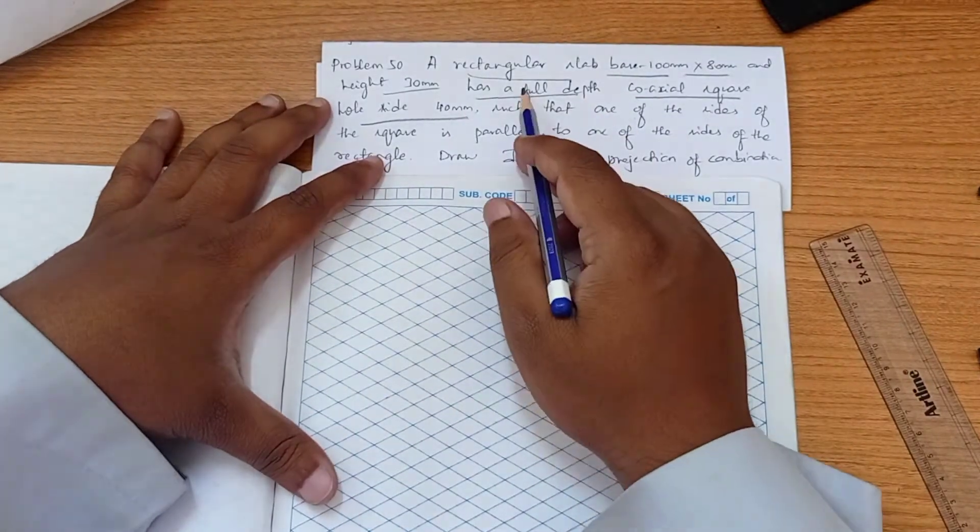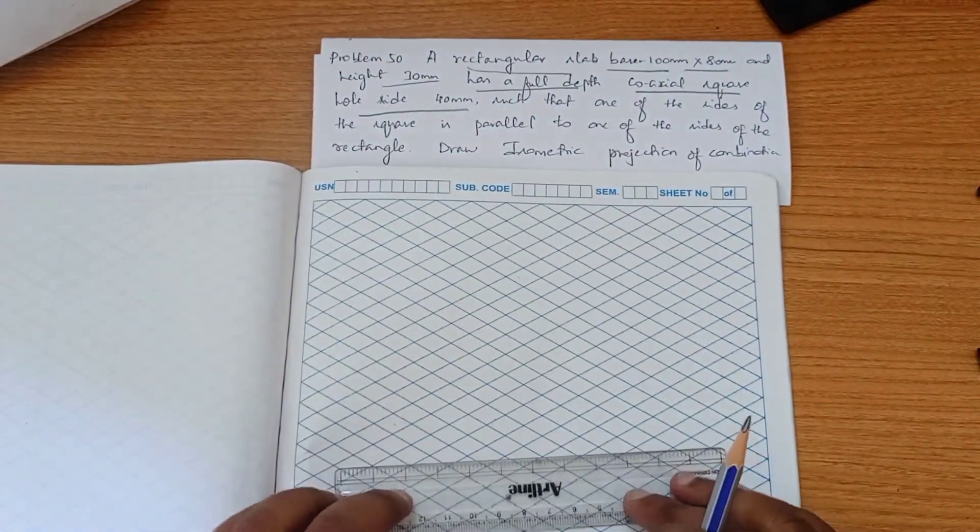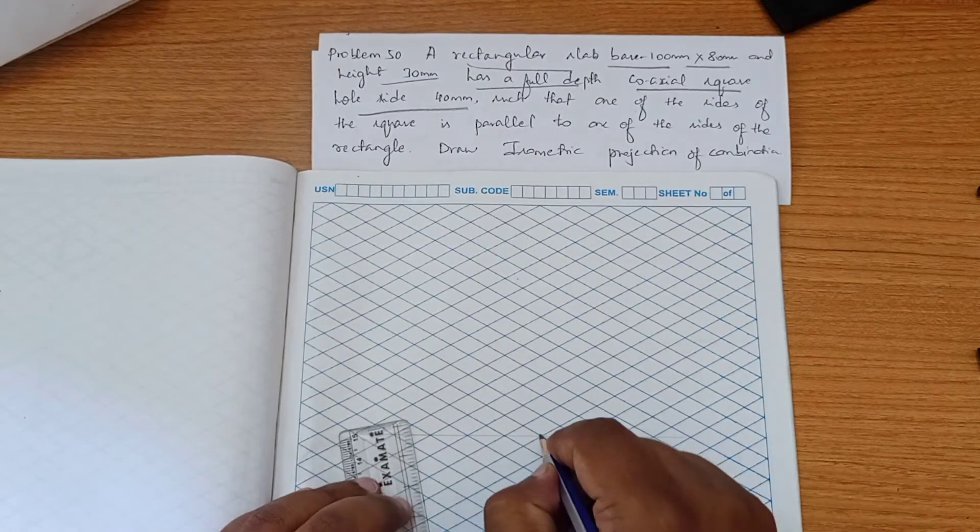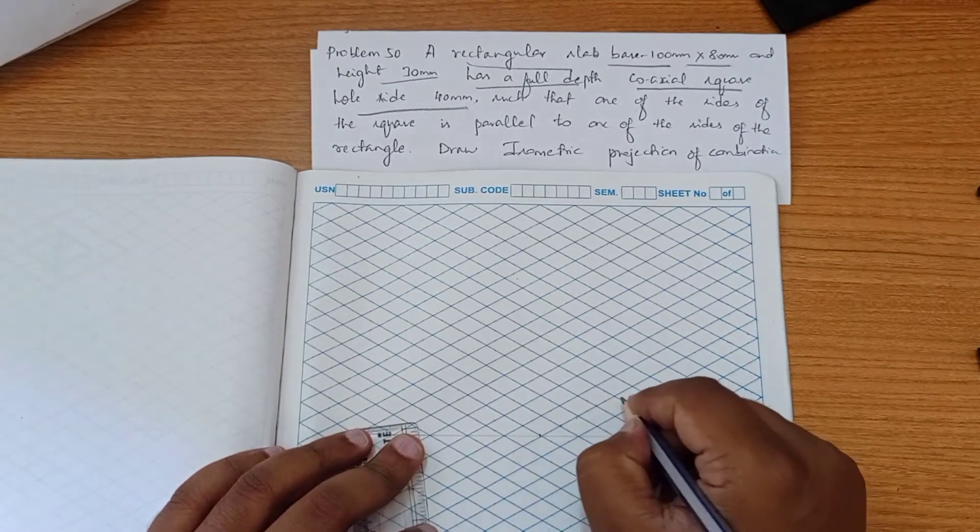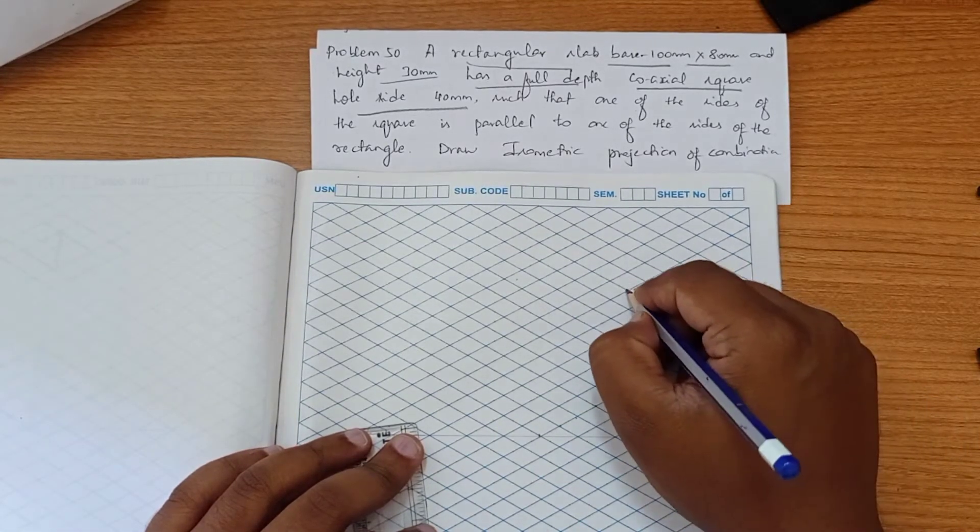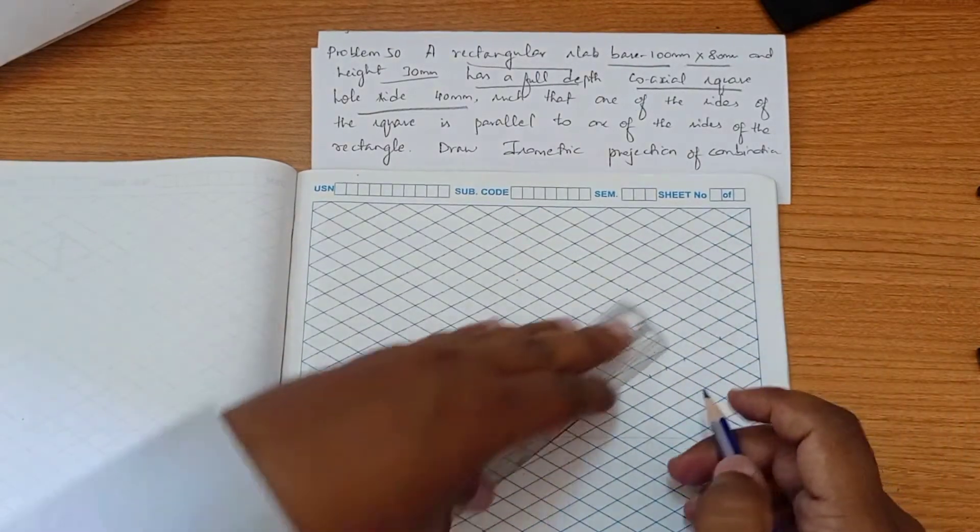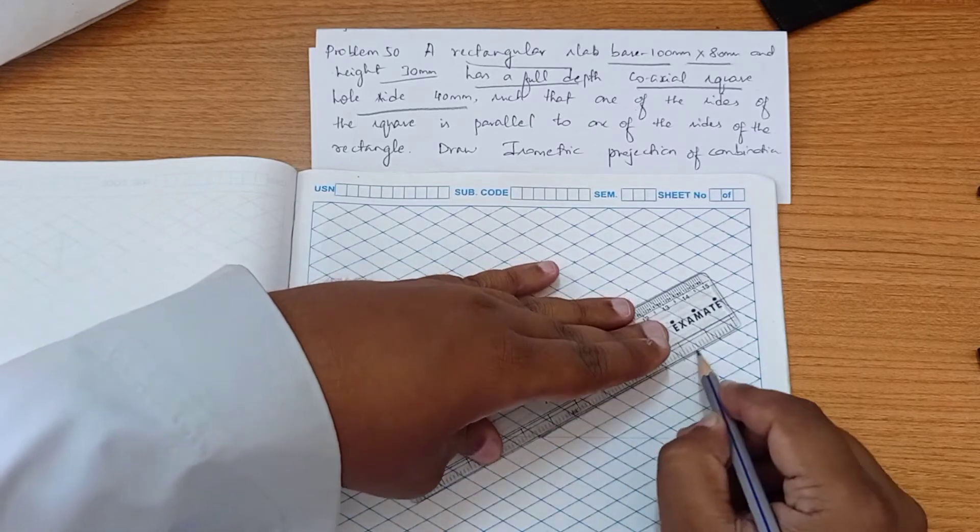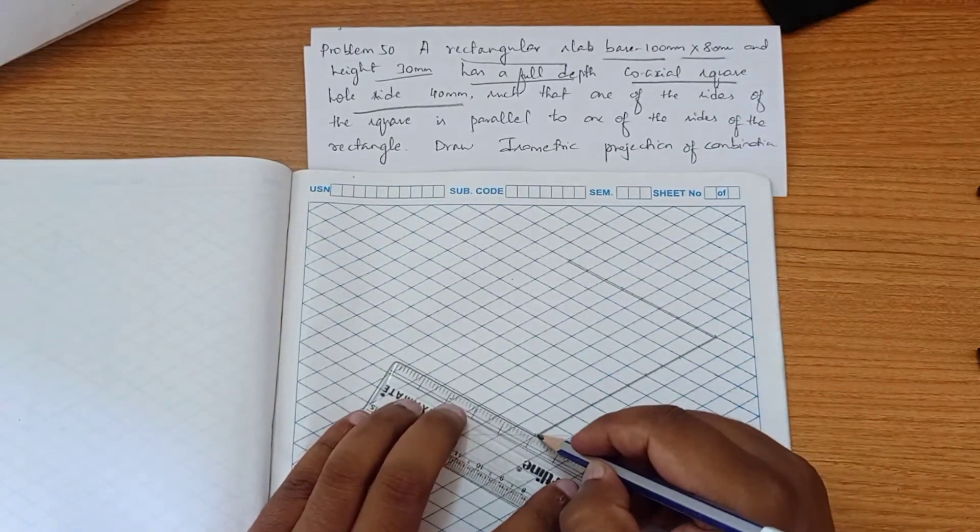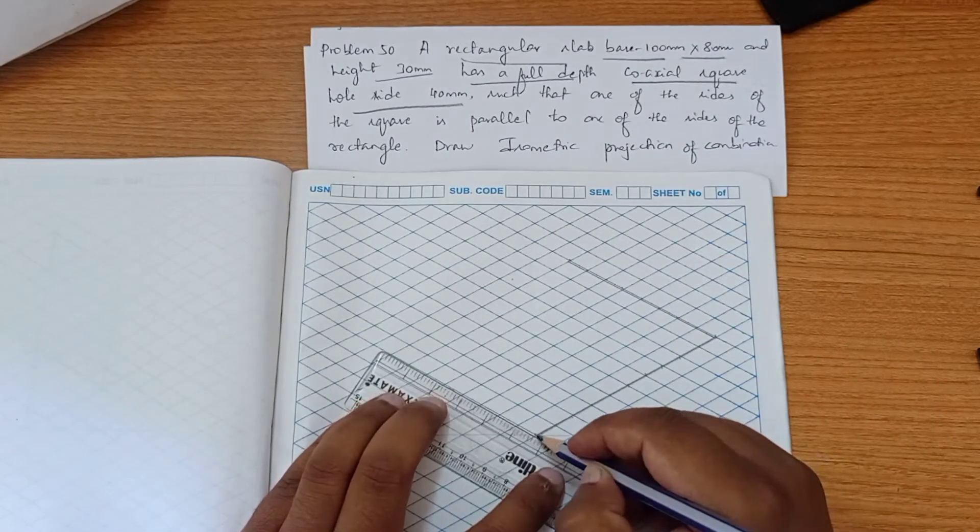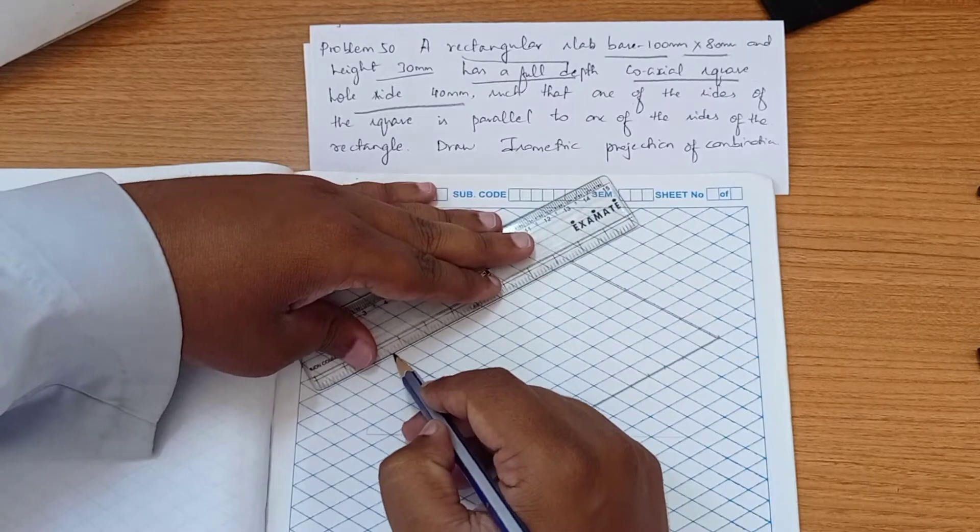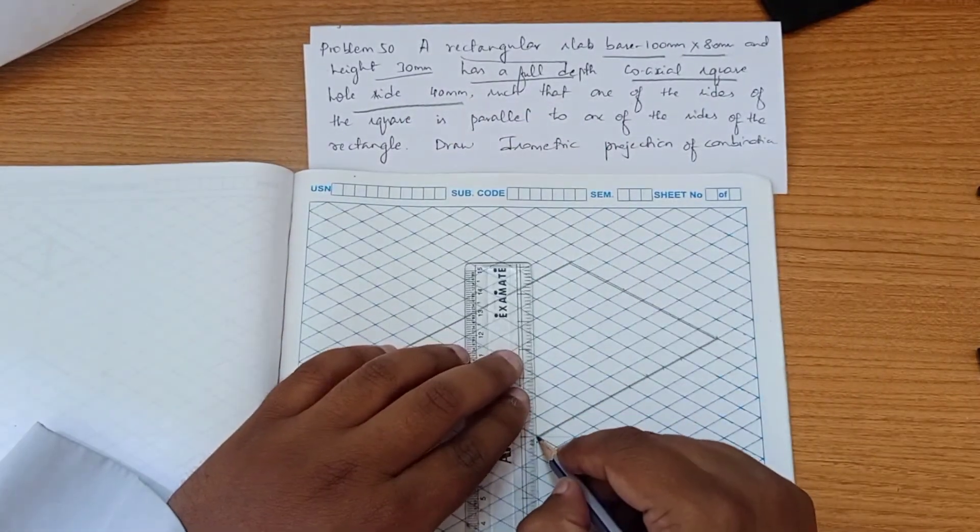First we are going to construct the rectangular slab here. From this 100... 1, 2, 3, 4, 5, 6, 7, 8, 9, 10... 1, 2, 3, 4, 5, 6, 7, 8... 100 by 80, that means 10 into 8, and height 30 means 3 boxes.